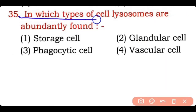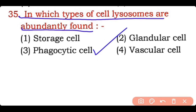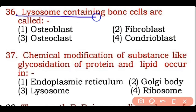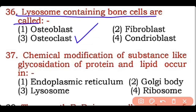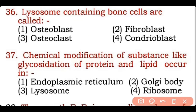Question 35: In which type of cell are lysosomes most abundantly found — storage cells, glandular cells, phagocytic cells, or vascular cells? Correct answer is option three — phagocytic cells have a large number of lysosomes. Question 36: Lysosome-containing bone cells are called — osteoblasts, fibroblasts, osteoclasts, or chondroblasts? Correct answer is option three — osteoclasts are bone cells that dissolve bone, a process known as bone resorption.